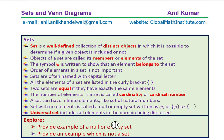Let's begin with some definitions. What is a set? A set is a well-defined collection of distinct objects in which it is possible to determine if a given object is included or not. When we say well-defined, it means that when we are trying to figure out any set, we have to define it so that we can exactly say whether an element or a member will be a part of that set or not.